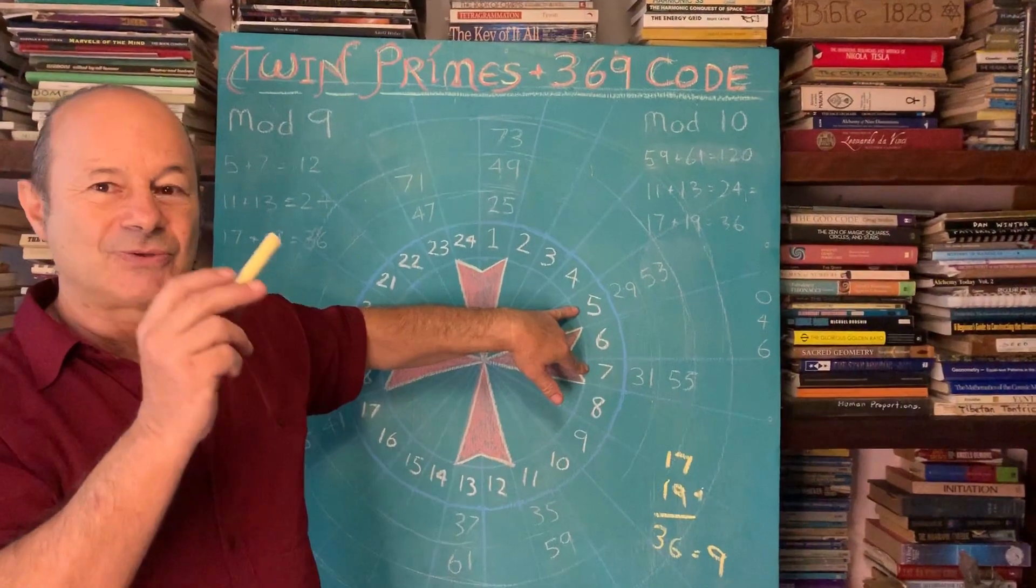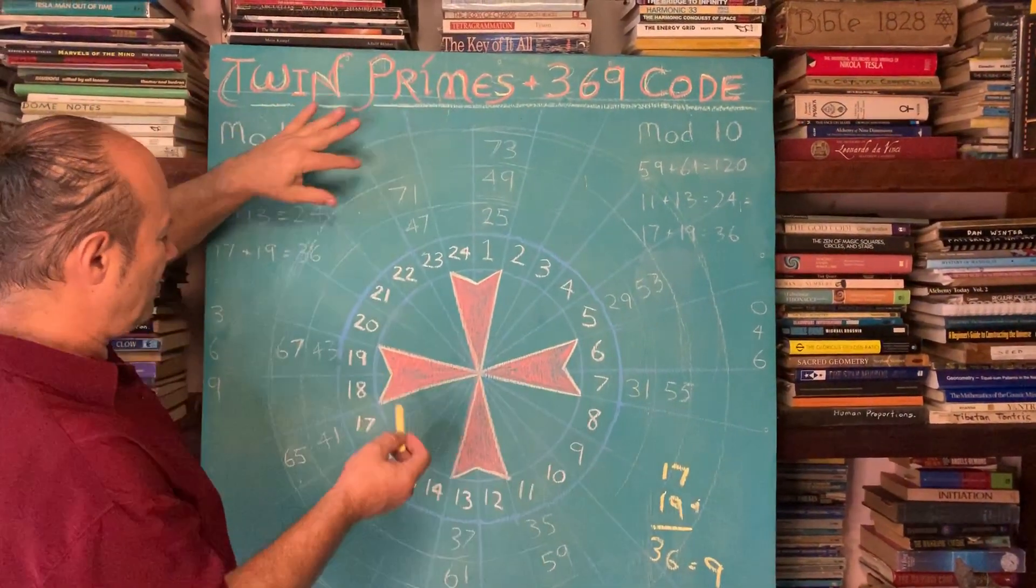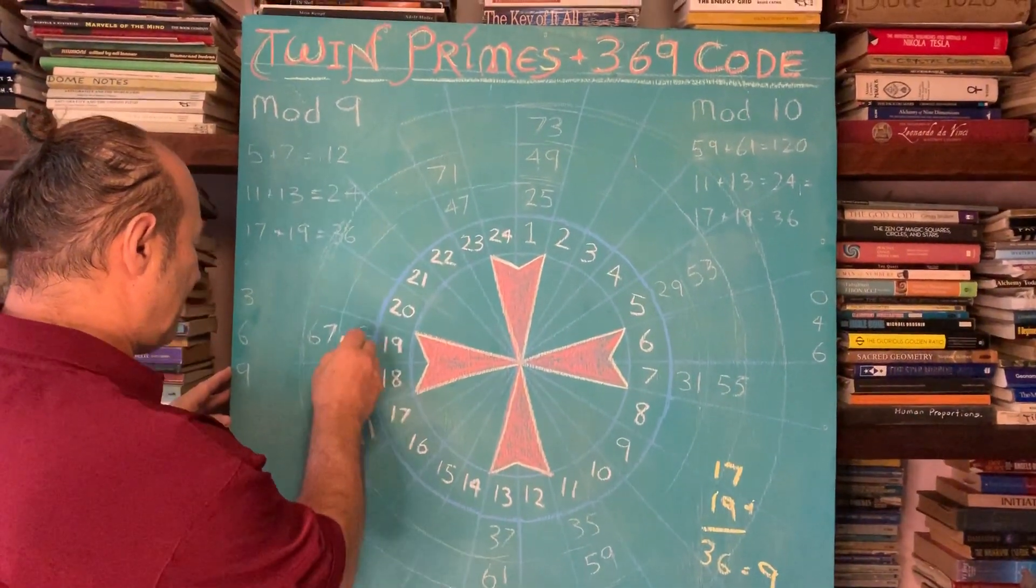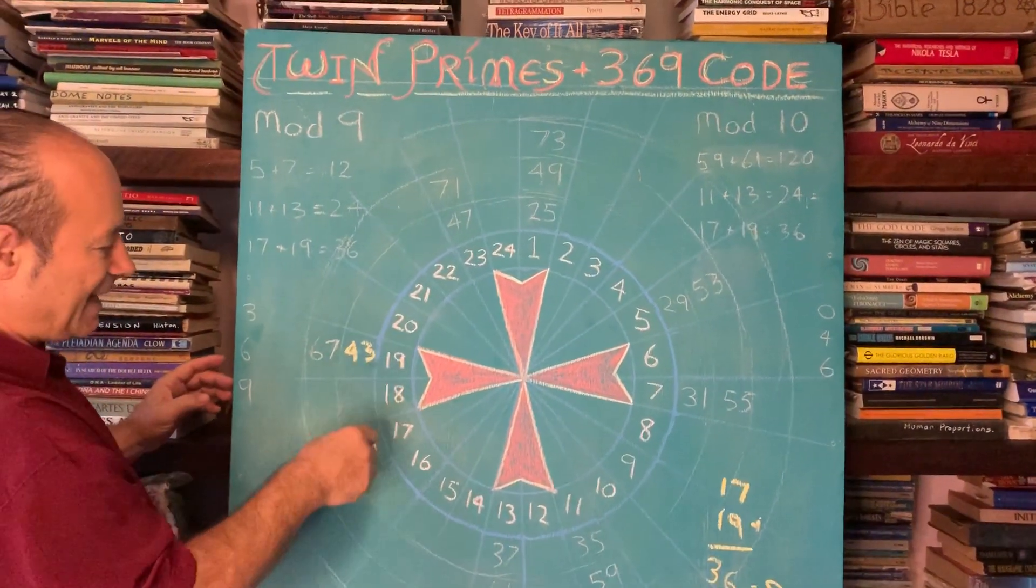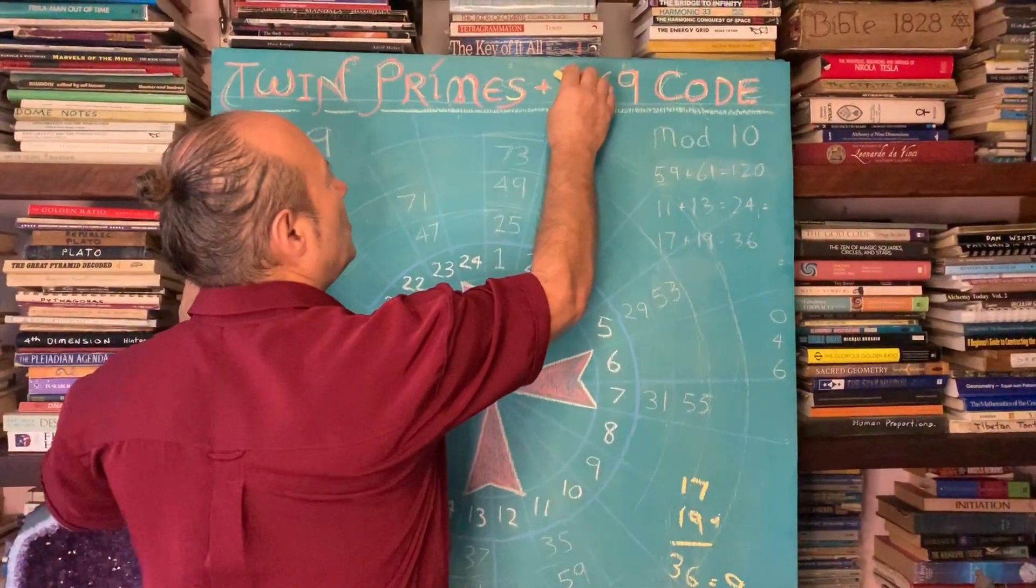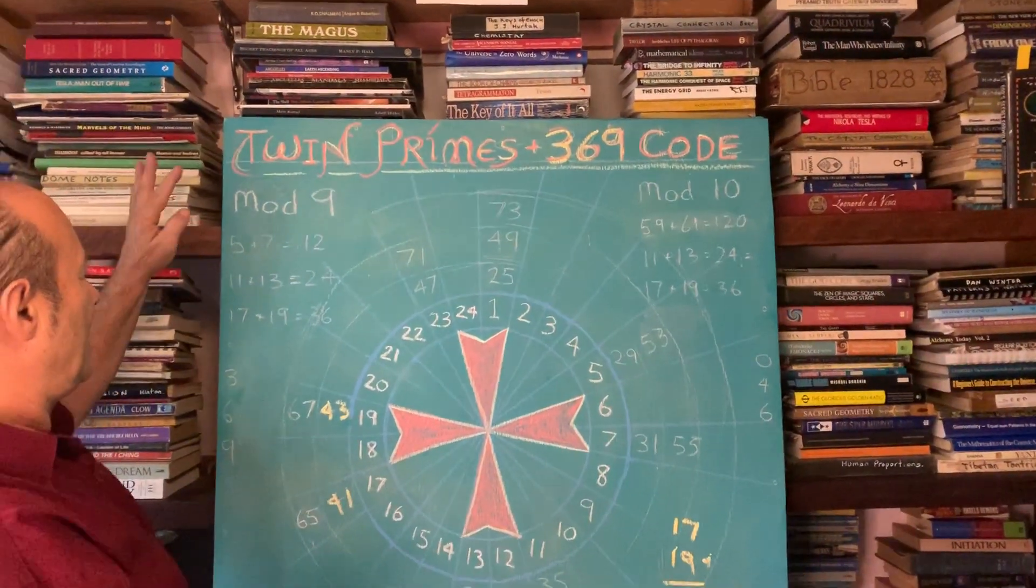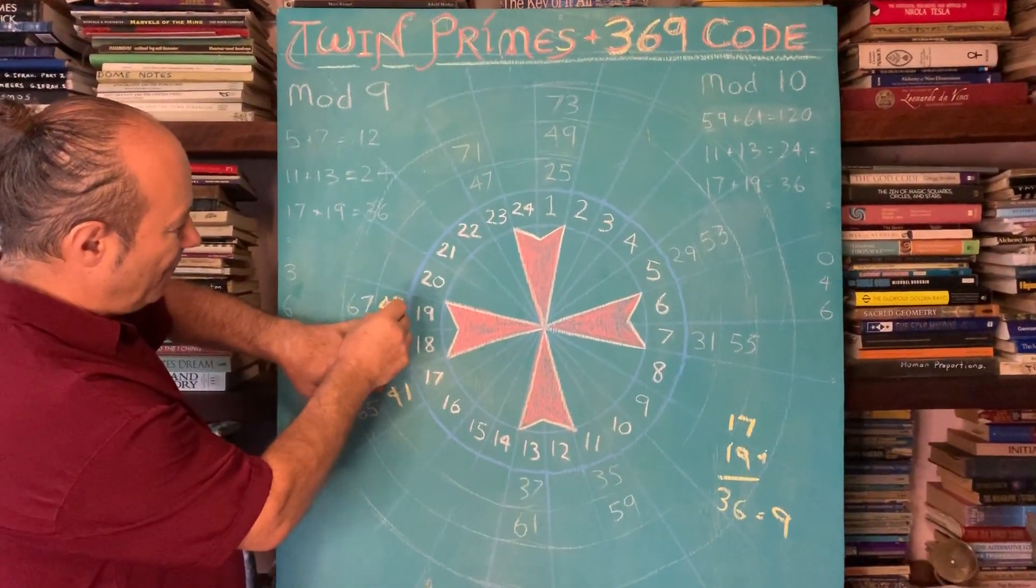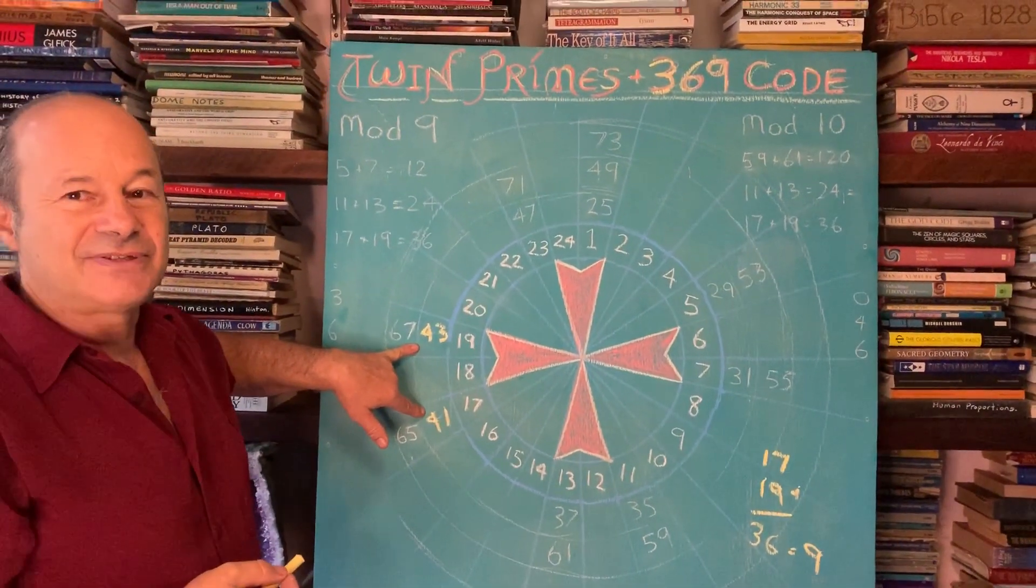So it works out that if you explore all the other twin primes, like 41 and 43 here, the sum of that is 84. Not only do all the twin primes add up to either 3, 6, or 9, they do something else as well. They're all divisible by 12. So 43 and 41 is 84 and 84 is divisible by 12.